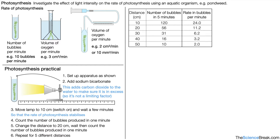Here is a set of data. We have distance going from 10 up to 50 in steps of 10. The table shows number of bubbles produced in five minutes, but we want the rate in bubbles per minute, so we divide by five to get the rate in bubbles per minute. That has been done for every row in the table.